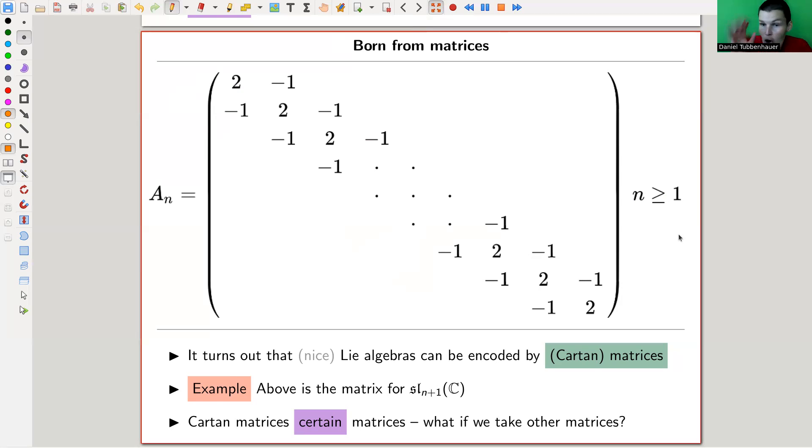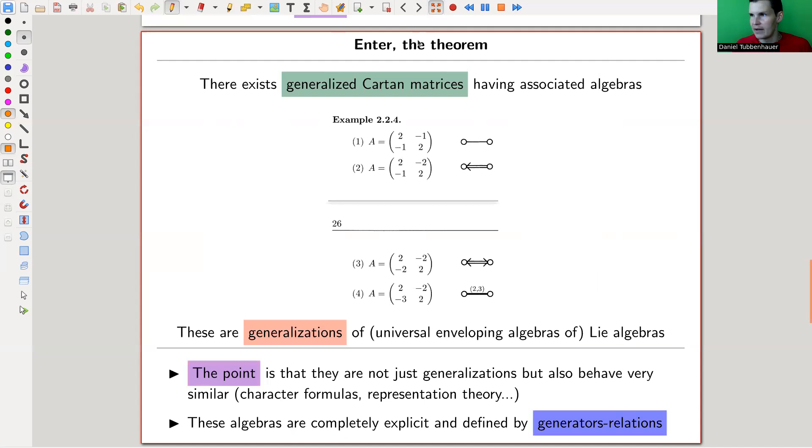It's a very special matrix, it turned out. People, in particular Kac and Moody, asked the question: what can you do if you allow more general matrices? Do you get still something that is mathematically interesting? The answer is yes, you do. You get those Kac-Moody algebras. Kac-Moody algebras are just algebras associated to a matrix very similar to the one for the Lie algebra, but more general matrices.